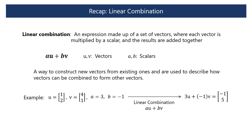Let's recap the concept of linear combination. A linear combination is an expression made up of a set of vectors where each vector is multiplied by a scalar, and the results are added together. If U and V are vectors and A and B are scalars, a linear combination of U and V can be expressed in this way. Linear combination is a way to construct new vectors from existing ones, and is used to describe how vectors can be combined to form other vectors.